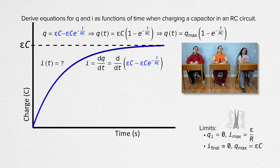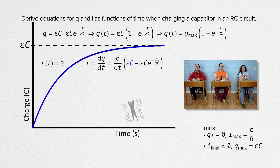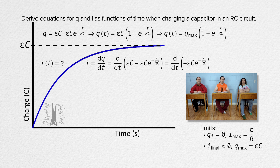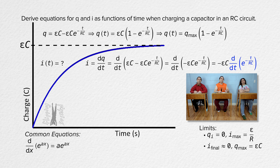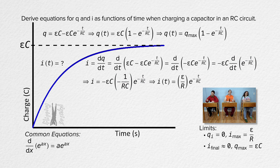Using the form EMF times capacitance minus EMF times capacitance times e to the power of negative t over resistance times capacitance: EMF and capacitance are both constant, so their derivative is zero, and we can take EMF times capacitance out from the derivative. The derivative of e to the negative t over resistance times capacitance is also on the table of information; it equals negative 1 over resistance times capacitance, times e to the power of negative t over resistance times capacitance. So the current through the circuit as a function of time equals EMF over resistance times e to the power of negative t over resistance times capacitance.